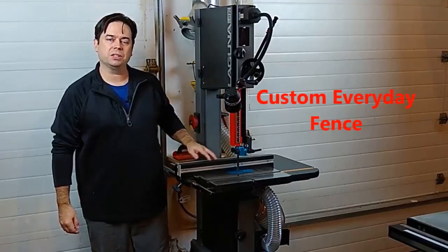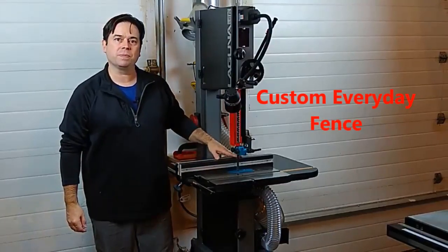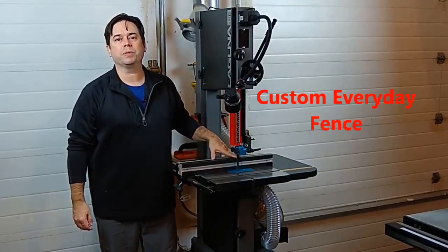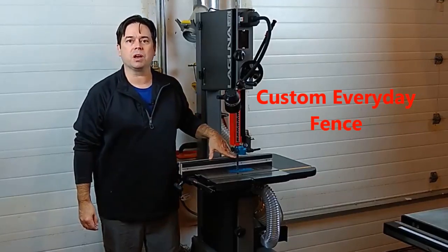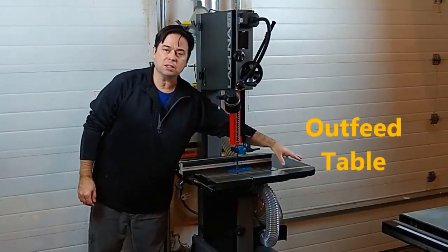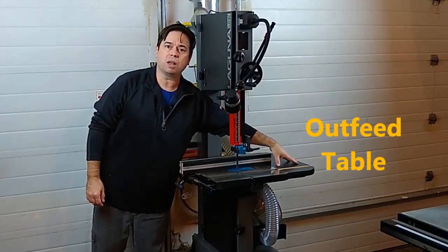First modification is this custom everyday fence that can work interchangeably with the tall resaw fence that came with your saw. Second mod is this permanently attached small outfeed table.